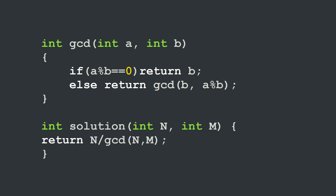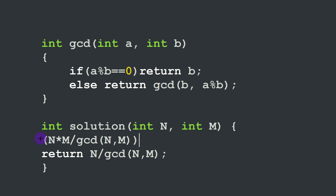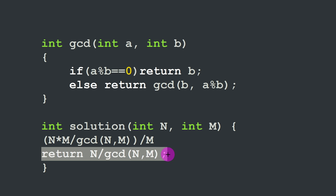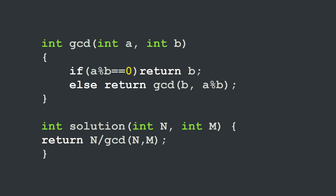We divide the least common multiple by the step size M. The LCM is given by N times M divided by GCD(N, M). So LCM divided by M simplifies to just N divided by GCD(N, M), which is what we return. You can use either form — both give the same result. This is our C++ solution, and the simplified form N / gcd(n, m) is cleaner and more elegant.